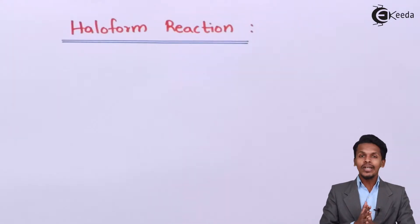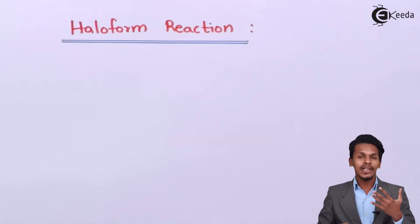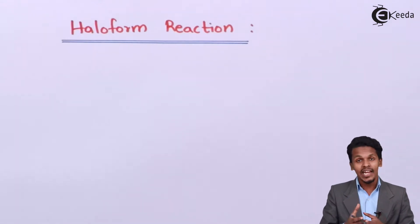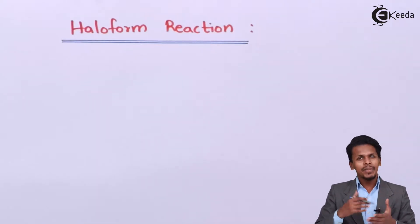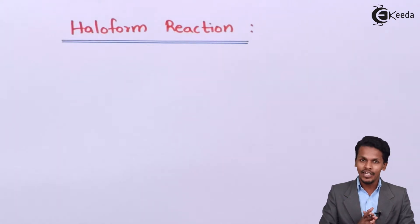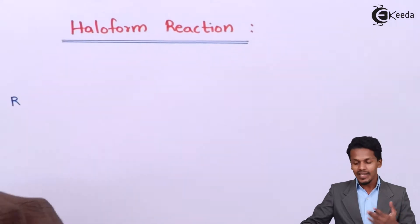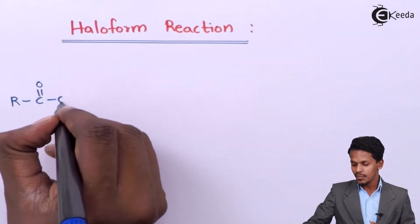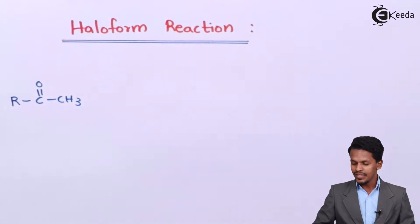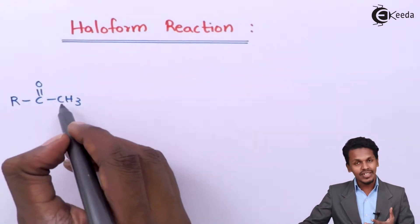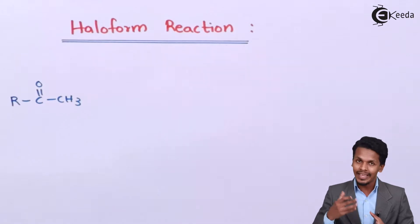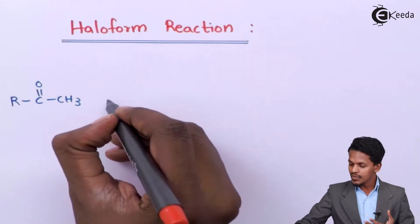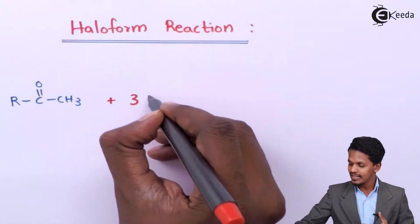In this topic we are going to talk about the haloform reaction. For that we have to consider a ketone or an aldehyde which consists of a CH3 or methyl group attached to C double bond O. Let me give a very clear general reaction. Suppose if we are talking about a ketone — R C double bond O CH3 — this Ketone has a CH3 or methyl group present, and this CH3 will be converted into a haloform.